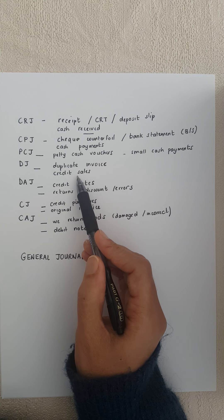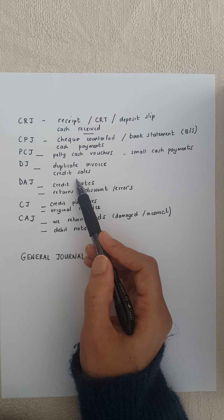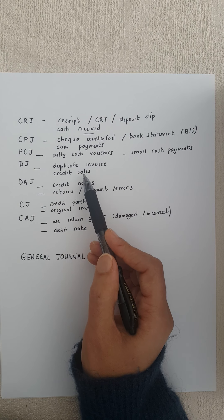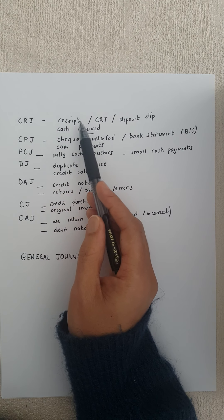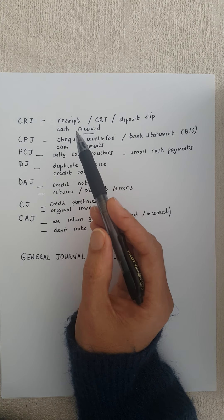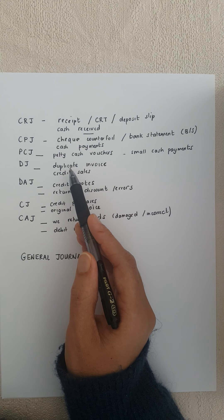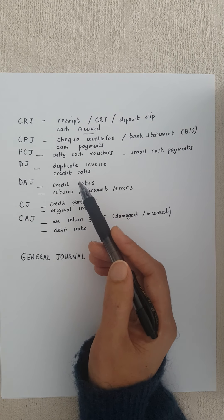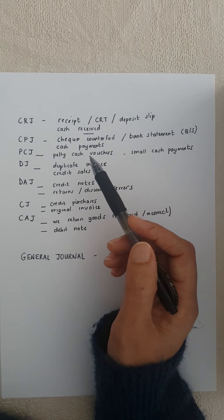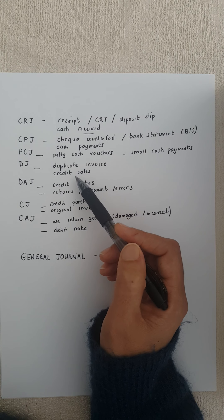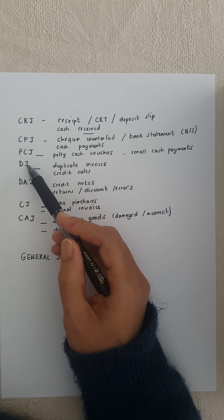In the debtors journal we record a credit sale. The debtor comes to our business and buys goods but doesn't pay cash, so we can't record it in the CRJ. We use the duplicate invoice — because we've given him the original invoice — to record our credit sales into our debtors journal.